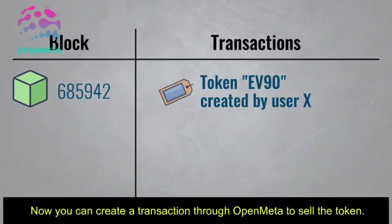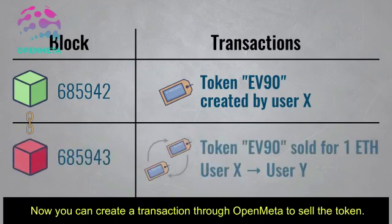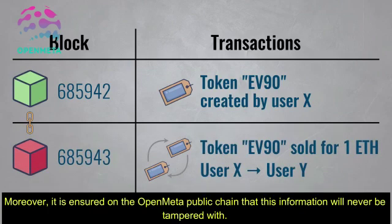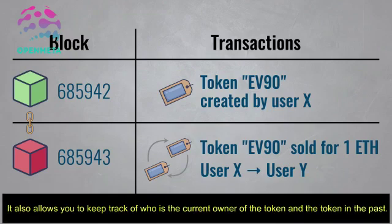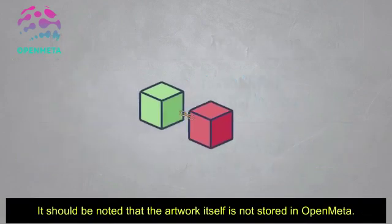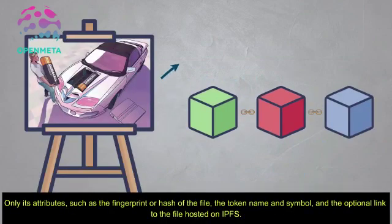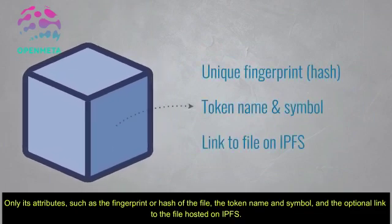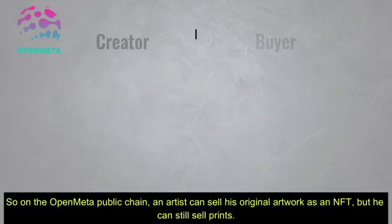Now you can create a transaction through Open Meta to sell the token. Moreover, it is ensured on the Open Meta public chain that this information will never be tampered with. It also allows you to keep track of who the current owner of the token is and who owned the token in the past. It should be noted that the artwork itself is not stored in Open Meta — only its attributes, such as the fingerprint or hash of the file, the token name and symbol, and the optional link to the file hosted on IPFS.